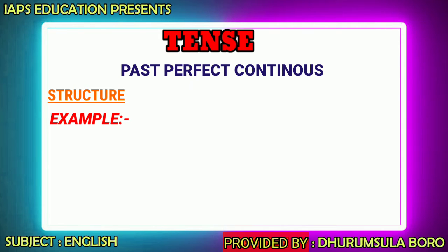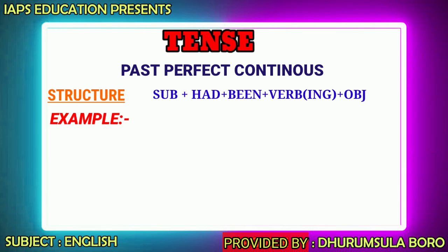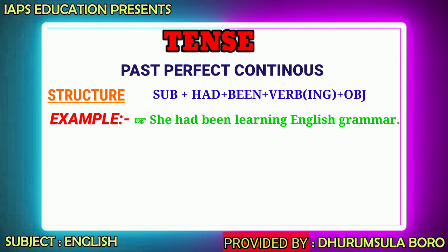Now let's move to the past perfect continuous tense. The structure is: Subject + had + been + present participle (verb + ing) + object. For example: 'She had been learning English grammar.' Here 'been' is the past participle form of the b-verb, used to form the perfect continuous tense.